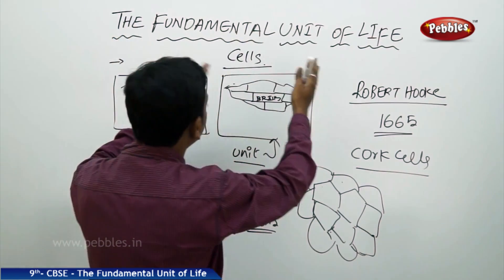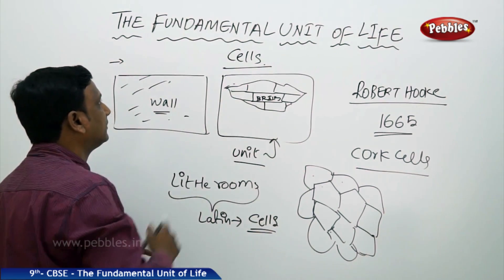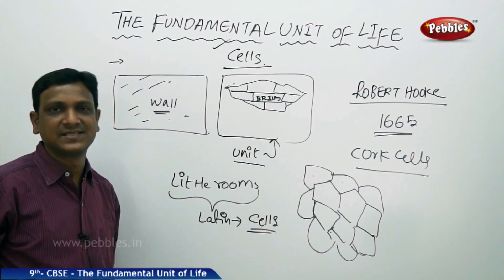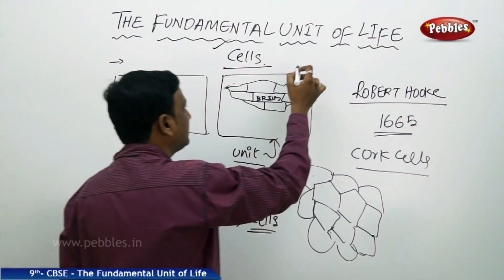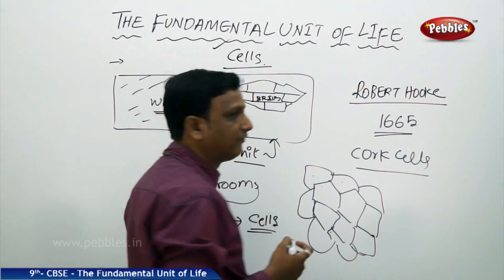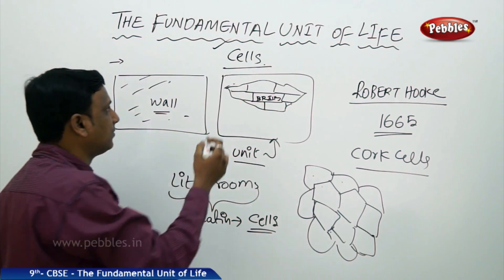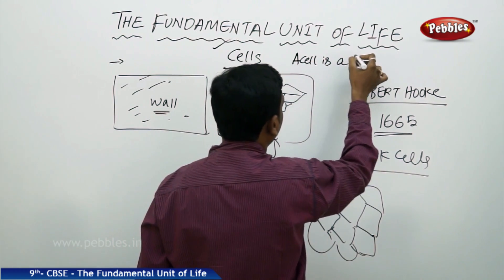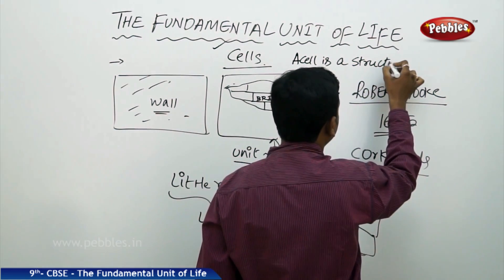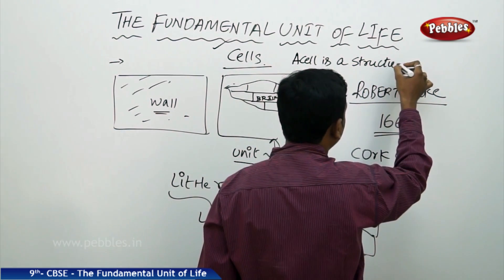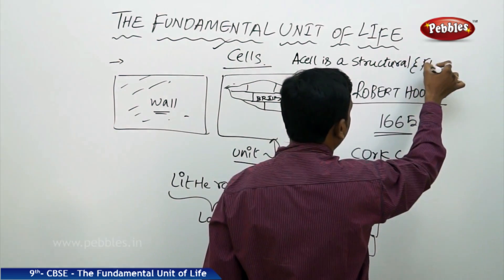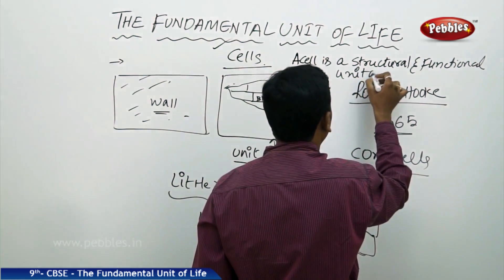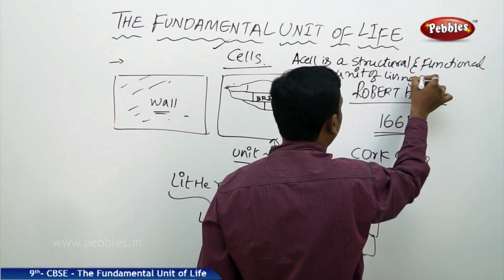We can understand that the functional unit is also the fundamental unit. At the same time, it is the functional unit as well as the structural unit. So, a cell is the structural and functional unit of living organisms. Robert Hooke identified this through an experiment in the year 1665 — that a cell is the structural and functional unit of living organisms.